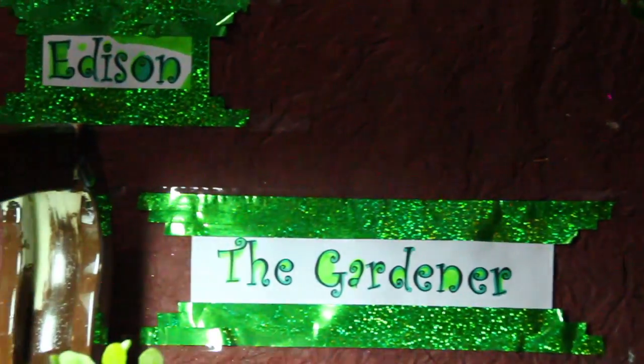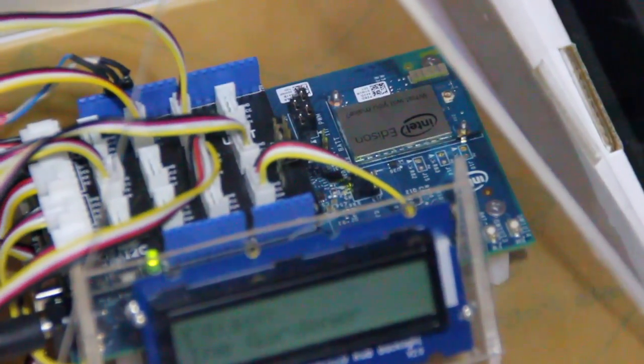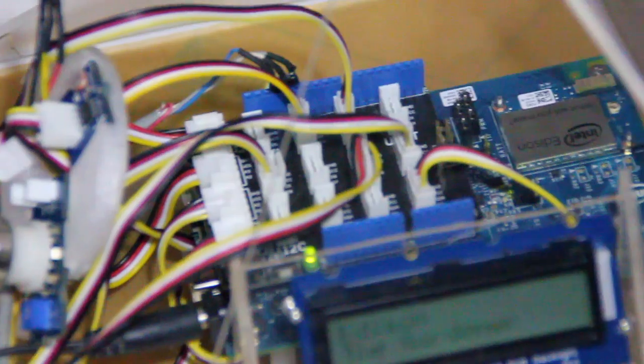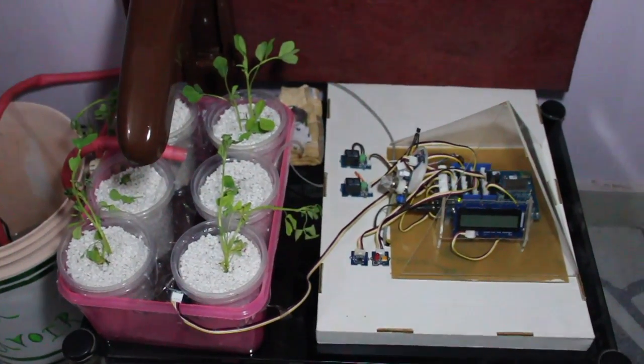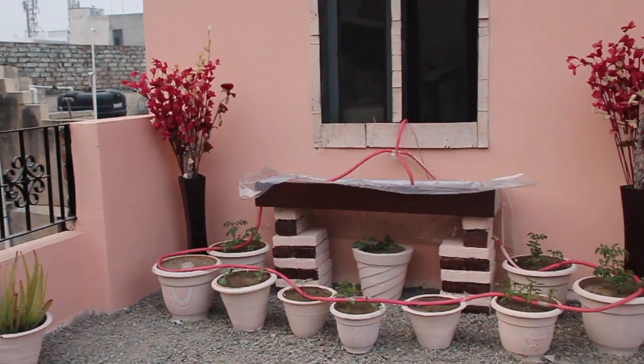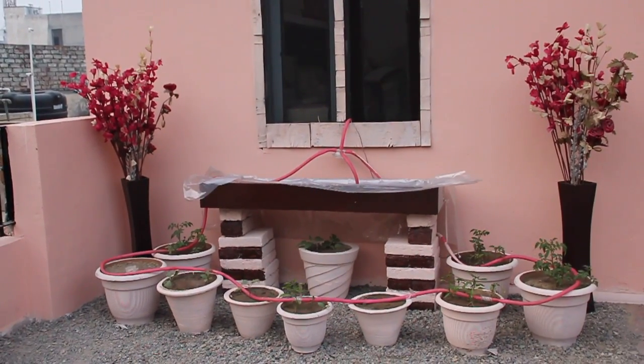Hi, this is the demo video for our project Edison the gardener. Edison the gardener is a complete garden management solution based on the Intel Edison and OpenHub. It is designed to work for outdoor soil gardens as well as indoor gardens with support for soilless hydroponics.